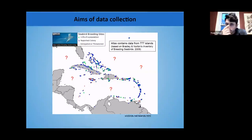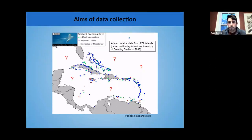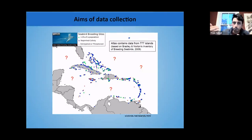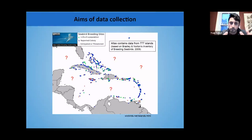The map from the 2009 dataset shows there are a lot of colonies in the Caribbean — about 800 islands have seabirds on them. We don't expect all of them to be covered this year, but we're really pushing for as much as possible. If you can go out, that would be great. If you cannot this year but know of an island you'd like to survey, that helps us prioritize work for coming years.